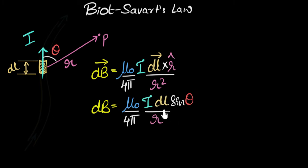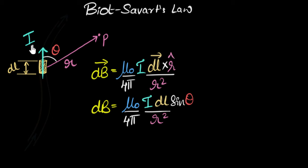What is the equation saying? First, there is a constant — just like in Coulomb's law we had 1/(4πε₀), here we have μ₀/(4π). Then it says that magnetic field depends upon the strength of the current, which makes sense because we know it's moving charges that create magnetic fields. Higher current means more moving charges per second, so more magnetic field.